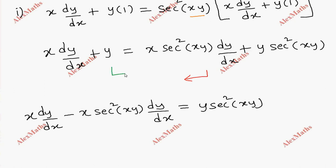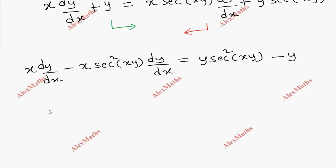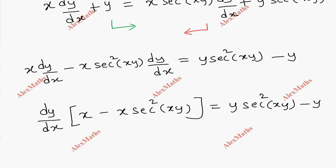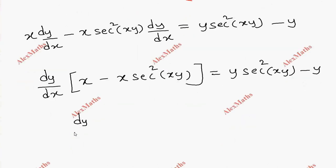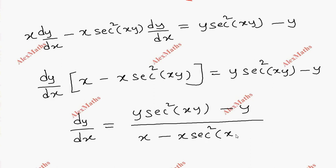X secant squared xy into dy/dx equal to y secant squared xy into dy/dx. This term on the other side minus the term, but y on the other side minus the term.